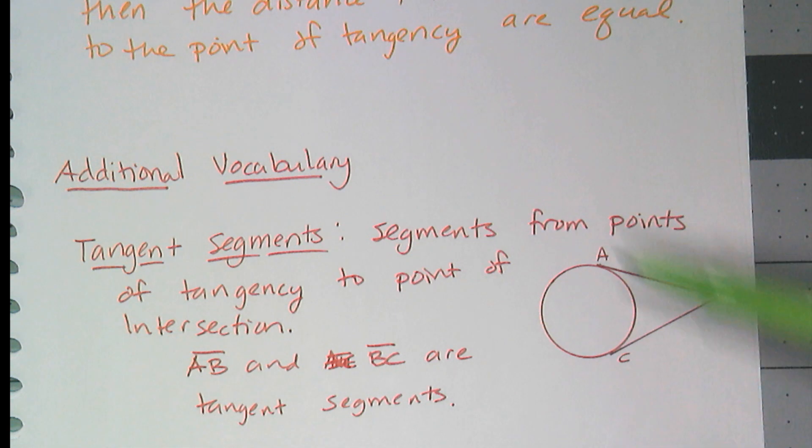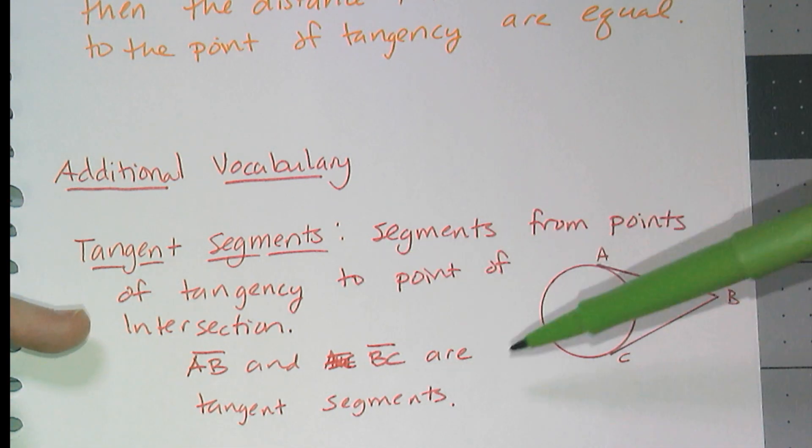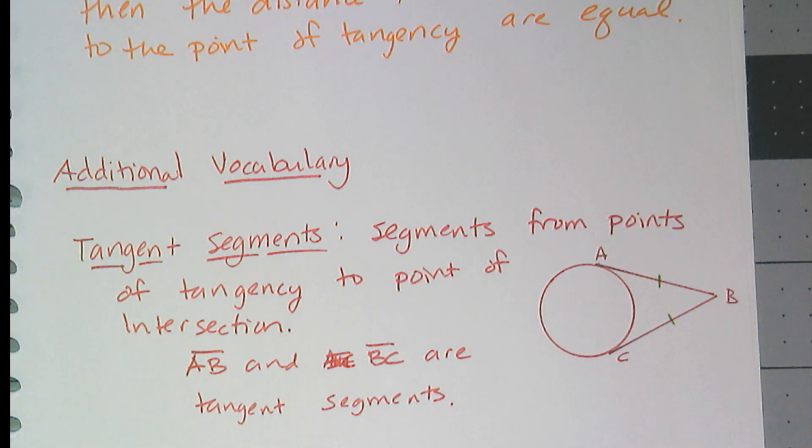We're going to call these tangent segments. They are segments from the point of tangency to the point of intersection. So I know that by C60, those two segments are congruent. So this is the picture you would draw for C60. And we call these tangent segments AB and BC, because they're made by tangents that intersect.